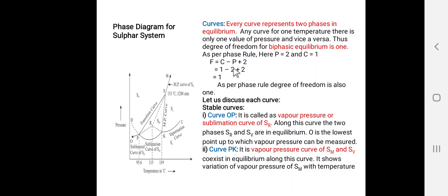For curves, every curve represents two phases in equilibrium (biphasic equilibria). For any given temperature on a curve there is only one value of pressure, and vice versa. Since C = 1 and P = 2, by the phase rule F = C − P + 2 = 1. So the degree of freedom for curves is one — the curves are univariant.